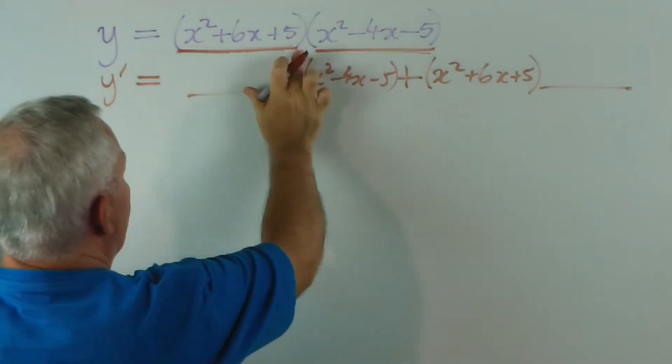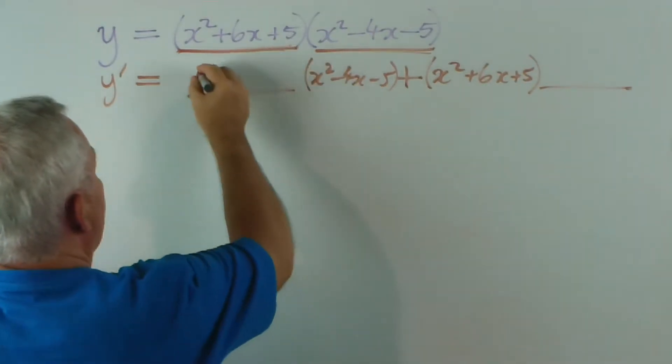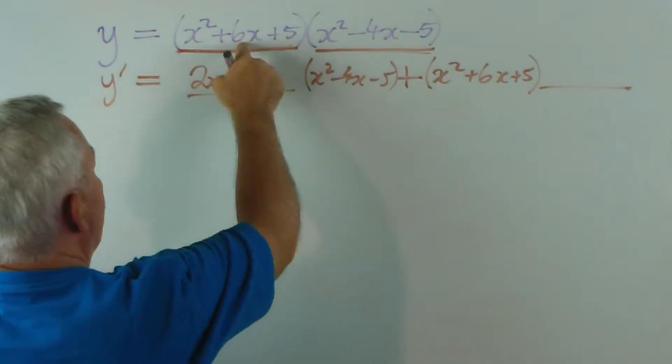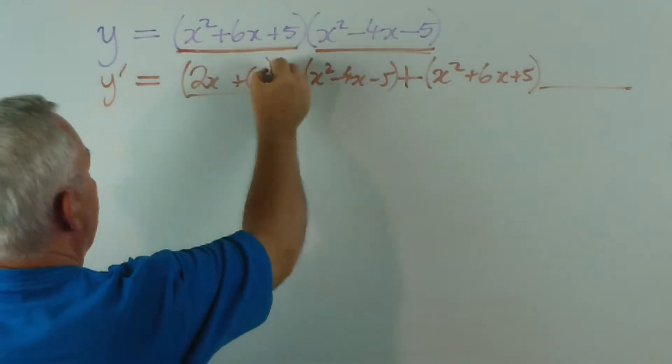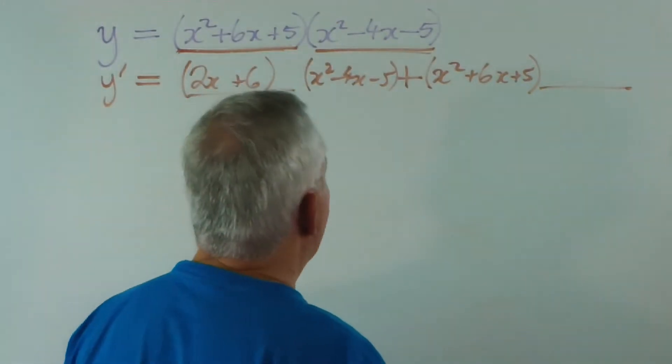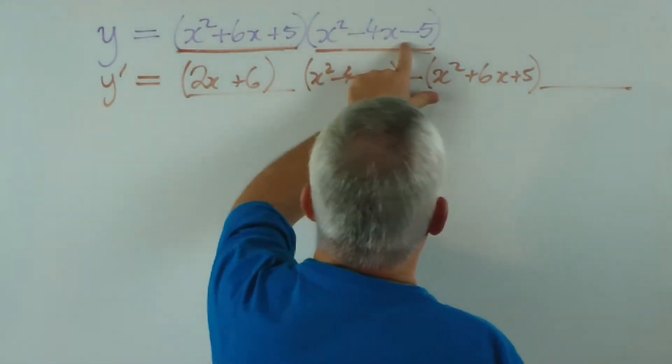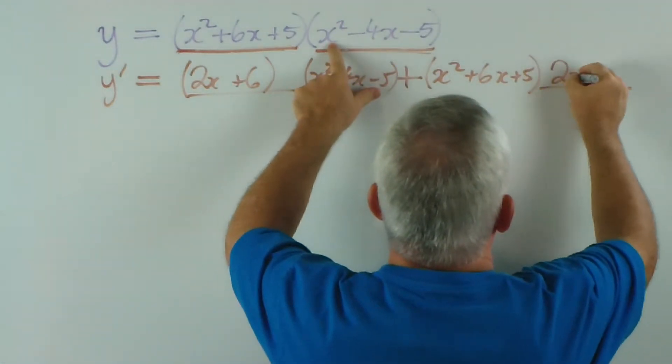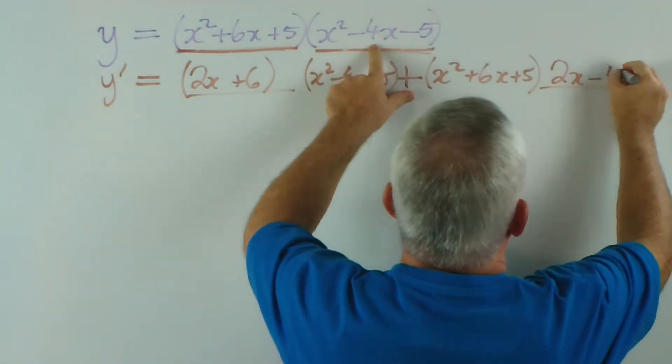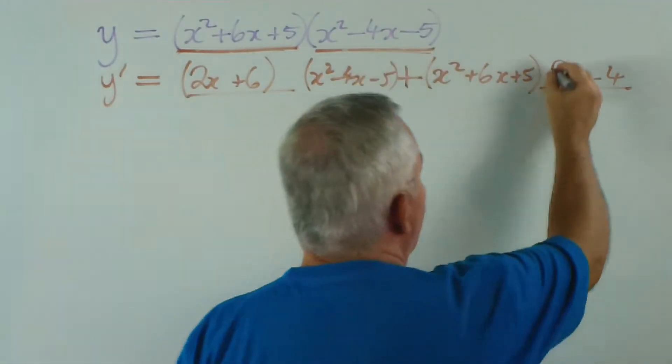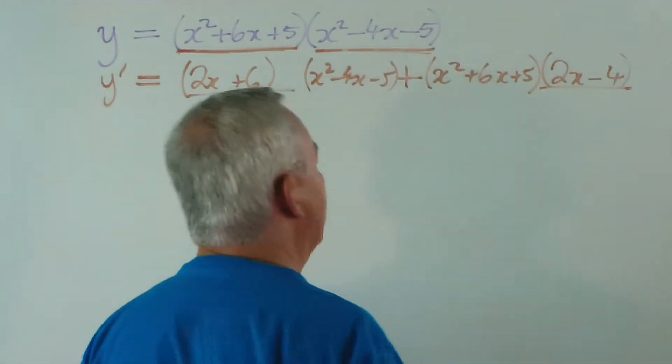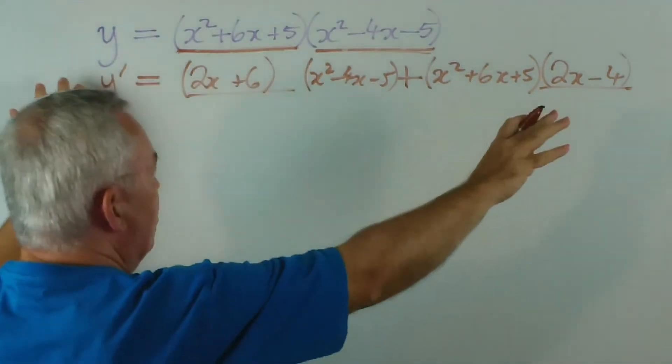So what I've done is I've left a gap here for the derivative of the first part, and here for the derivative of the second part, and everything else I've written in place. So let's write in the derivatives. What's the derivative of x squared plus 6x plus 5? Well, the derivative of x squared is 2x, the derivative of 6x is 6, and the derivative of the constant is zero. What's the derivative of this? It's 2x minus 4, and the derivative of minus 5, of course, is zero. So there's our derivative of the second one. That's the product rule completed.